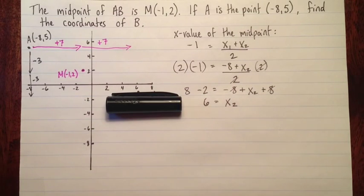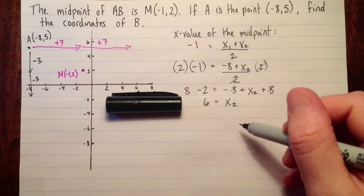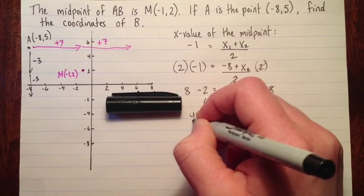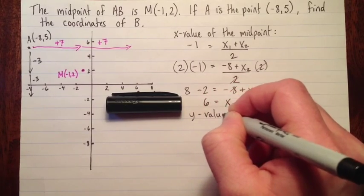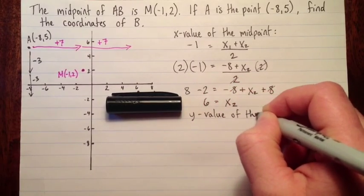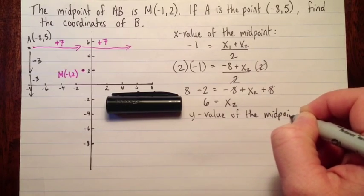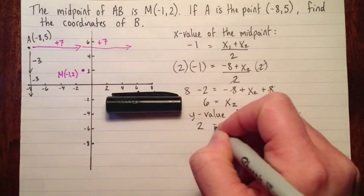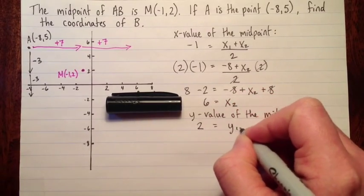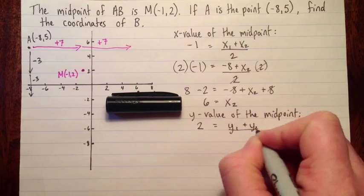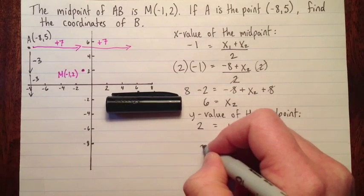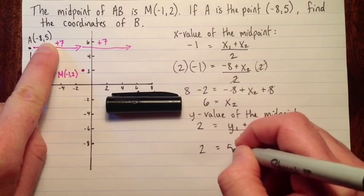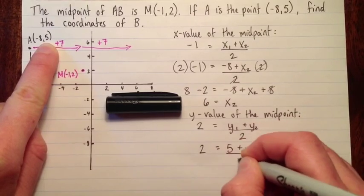Now I'm going to do exactly the same thing with the y values. So my y values, y value of the midpoint. The y value of the midpoint is 2, but we know that the y value of the midpoint is y1 plus y2 over 2, just the average. So now I'm going to substitute my y1. That's 5 plus y2 over 2.